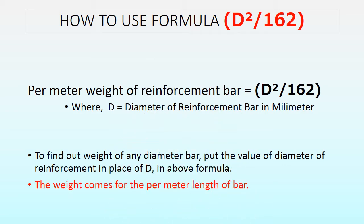Now let's discuss how to use the formula D squared by 162. To find the per-meter weight of a reinforcement bar, the formula D²/162 is used, where D is the diameter of the reinforcement bar. To find the weight of any diameter bar, put the value of the diameter in place of D in the formula. The weight obtained is for per meter length of bar, so the unit is kilogram per meter.